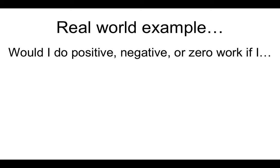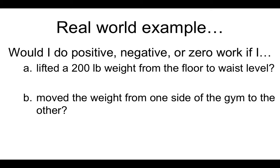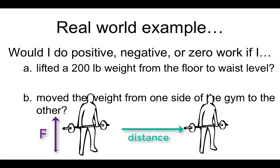Let's think of a real-world example. Would I do positive, negative, or zero work if I lifted a 200-pound weight from the floor to waist level? To lift the weight, I'm applying a force upward and the distance is also upward — same direction — so that's positive work. If we moved a weight from one side of the gym to the other, we'd be applying a force upward to lift it, and we'd be moving left or right, so those are perpendicular — zero work.